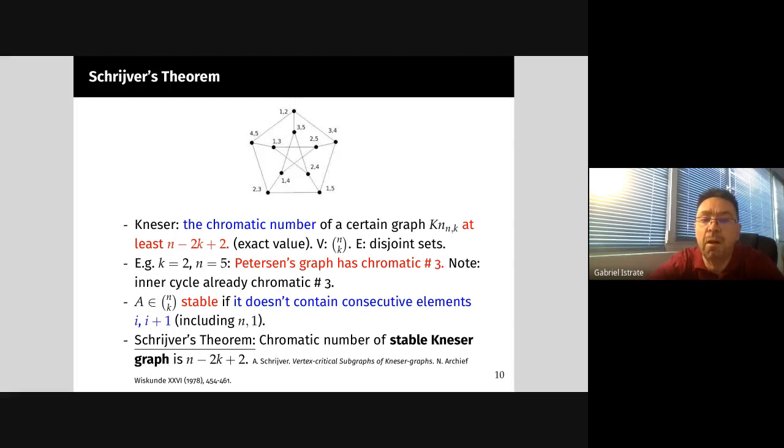Kneser can be viewed as a statement about chromatic number of a certain graph where vertices are sets. For instance, in this example, the universe has five elements and the sets have two elements. We get the Petersen graph and two vertices connected by an edge correspond to disjoint sets. The Petersen graph has chromatic number three, so Kneser generalizes a claim that Petersen's graph has chromatic number three. The inner cycle already has chromatic number three. You can think whether one can get something stronger than Kneser that would quantify this, and indeed that can be done.